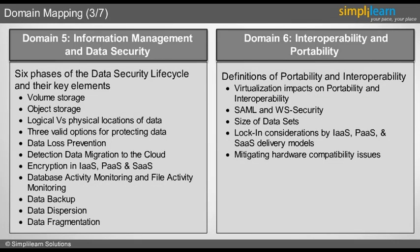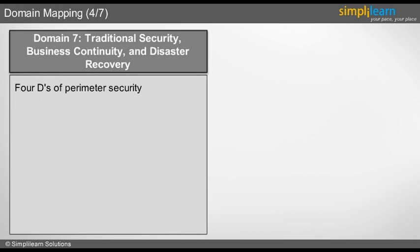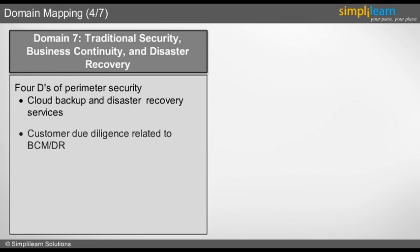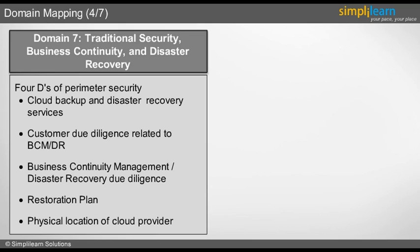Domain 7: Traditional Security, Business Continuity and Disaster Recovery. Here we will learn about the 4Ds of perimeter security, cloud backup and disaster recovery services, customer due diligence related to business continuity management and disaster recovery, the restoration plan, and about the physical location of the cloud provider.